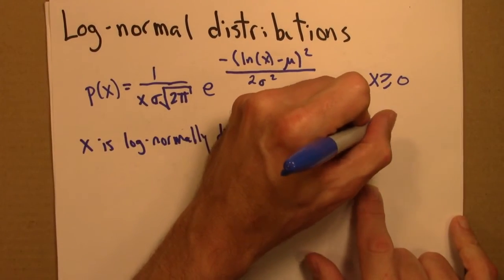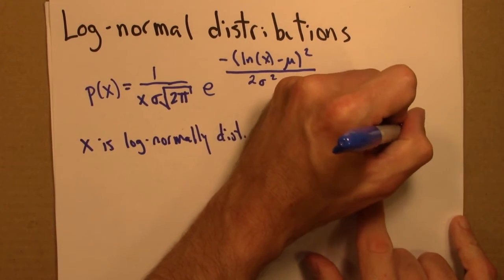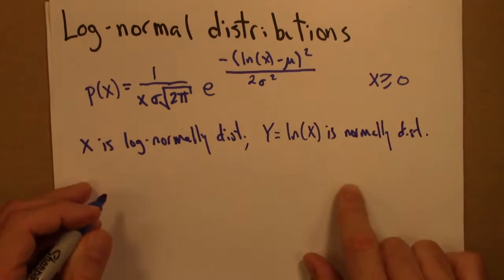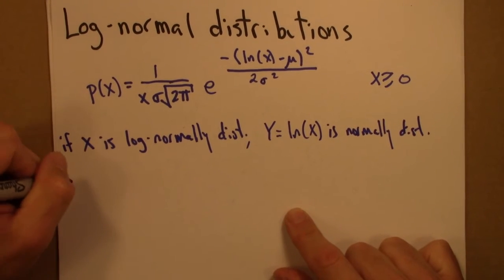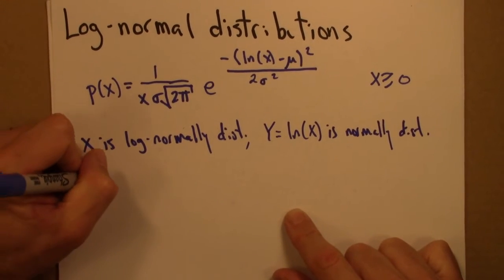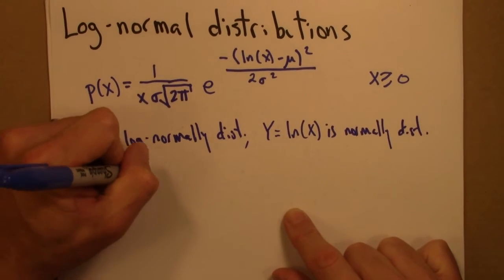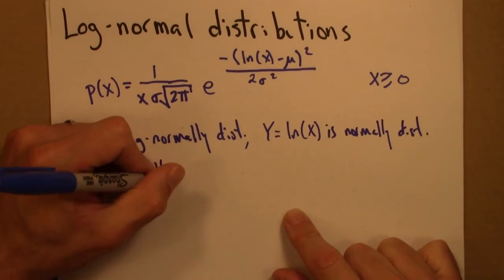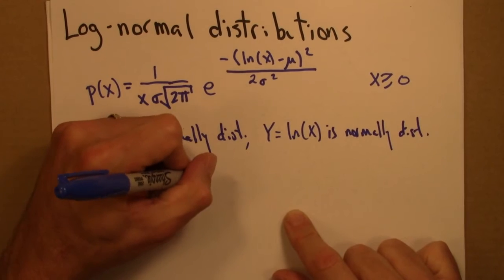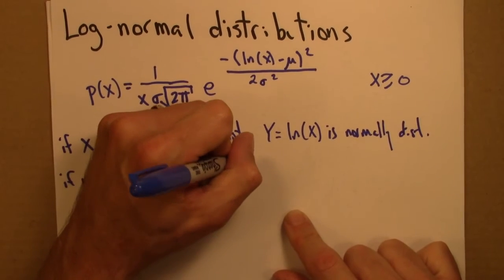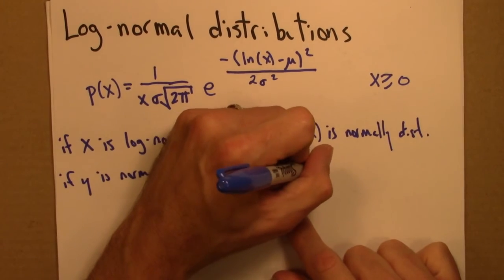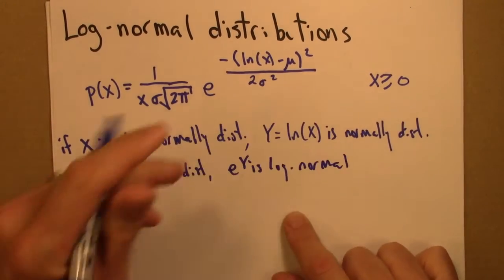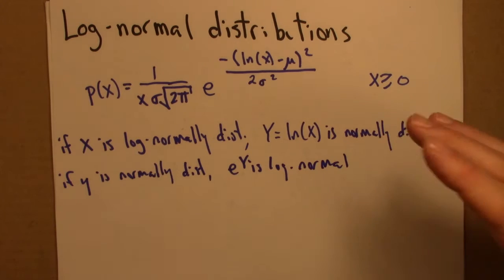Or another way to say this, if y is normally distributed, then the variable e to the y is log-normal.